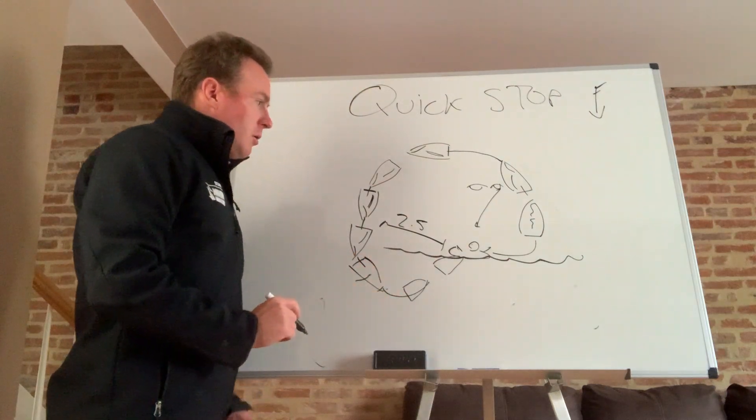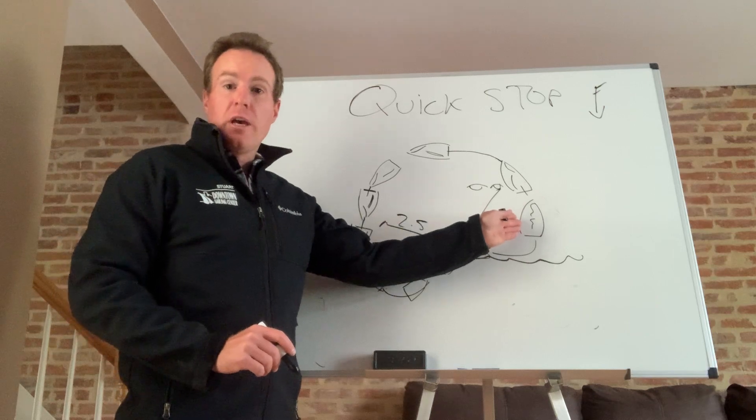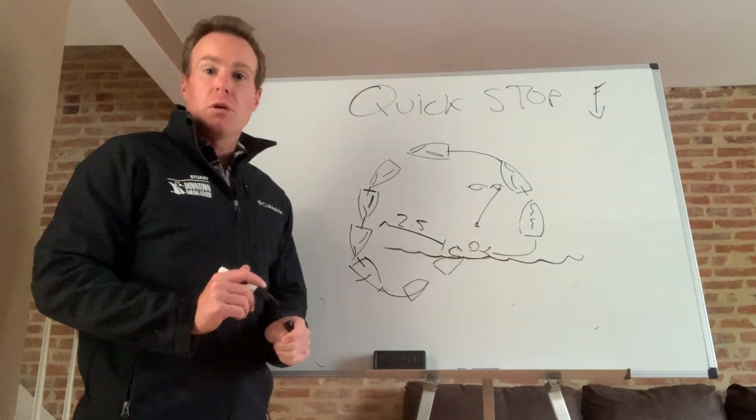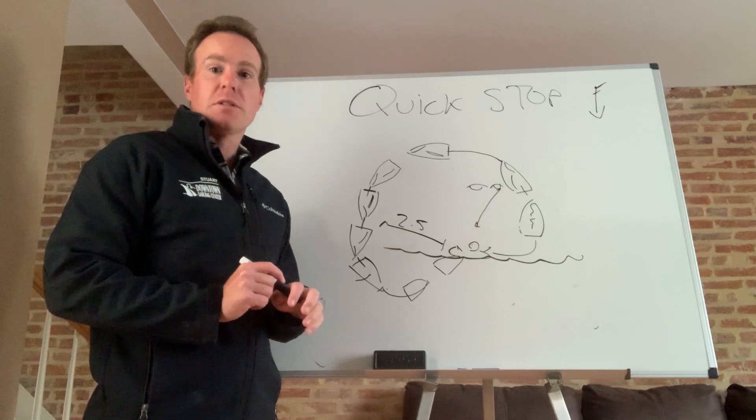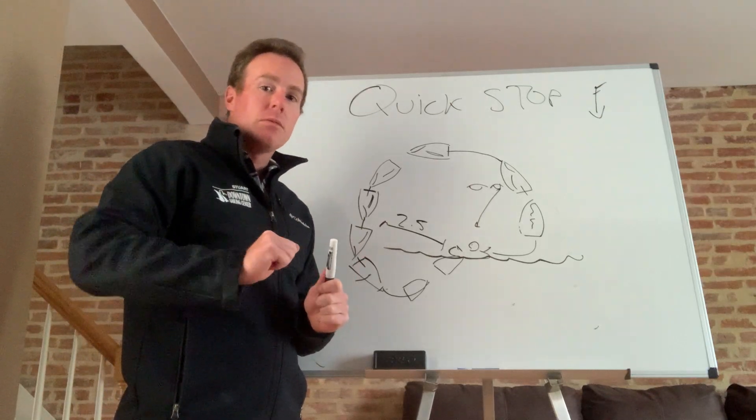A couple of key points to review. One, turn the boat into the wind quickly, smoothly, and to make sure that you're close to Oscar. That should be the first instinct of a helms person. You lose somebody overboard, quick stop, quick stop. Turn the boat into the wind.